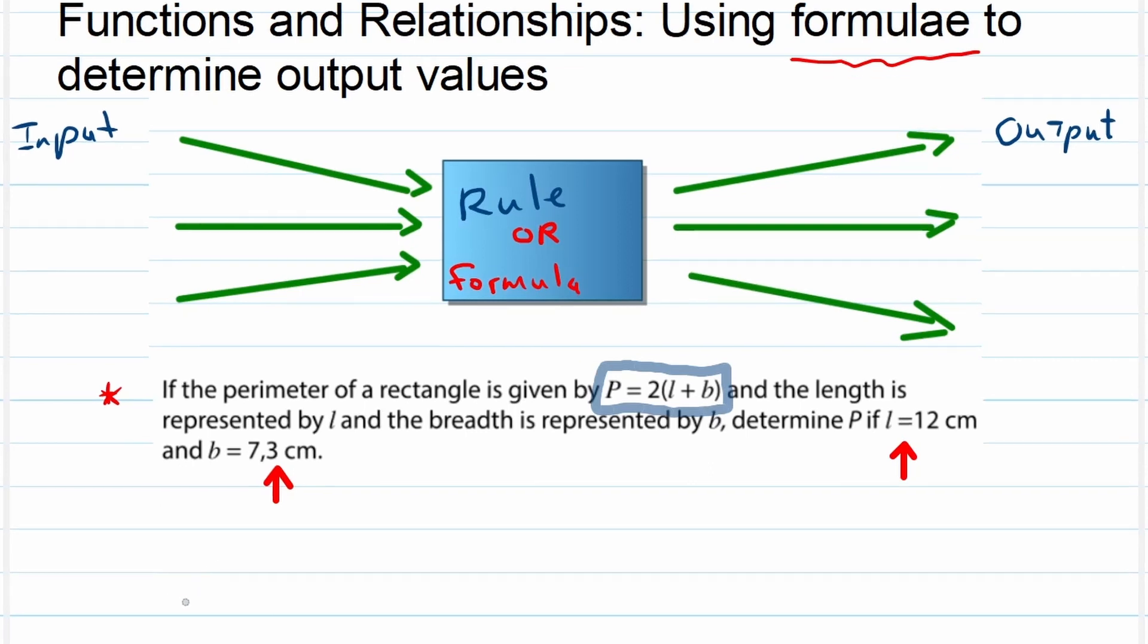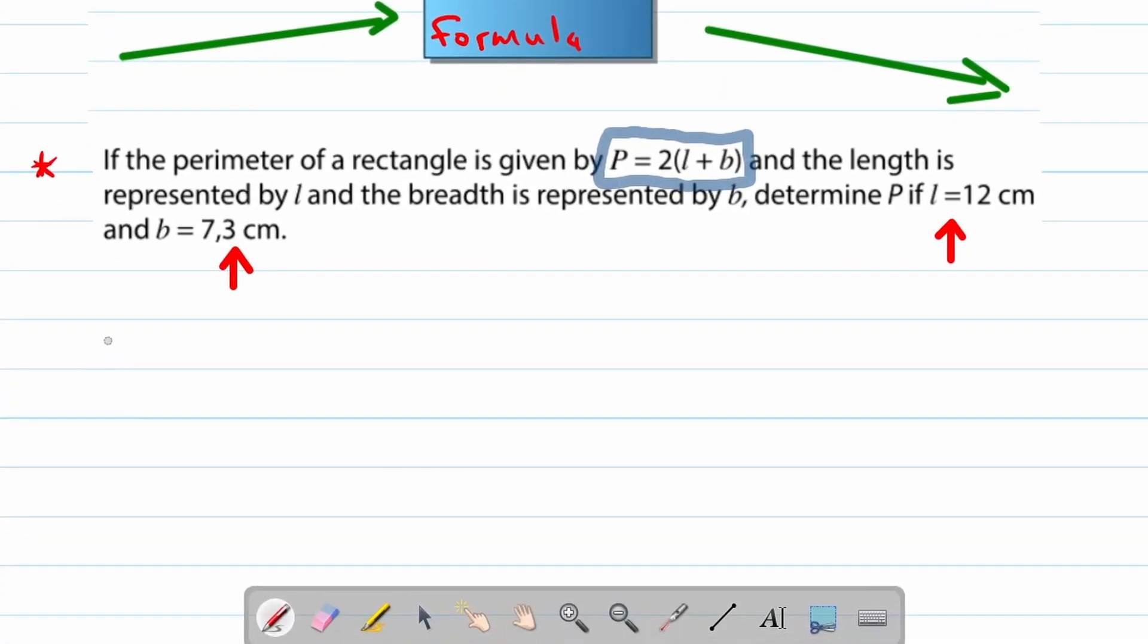So what is our first step? First step is write down the formula. P is equal to 2 times L plus B. Then we substitute our variables L and B with our input values. So it will be 2 bracket and in L's place we put 12 centimeters. And in B's place we put 7.3 centimeters.